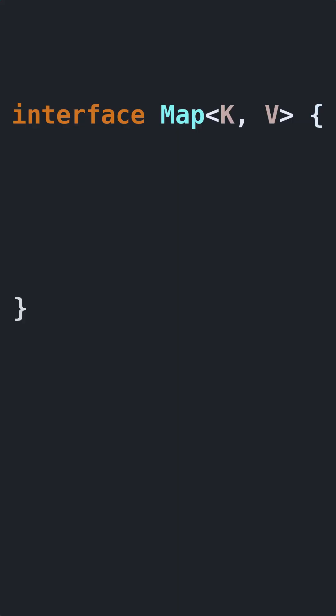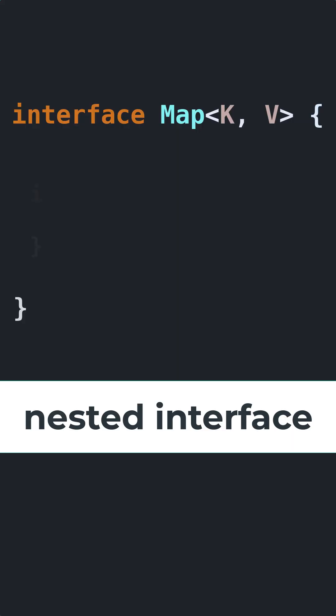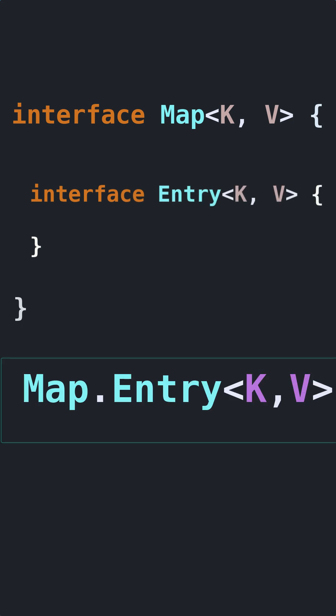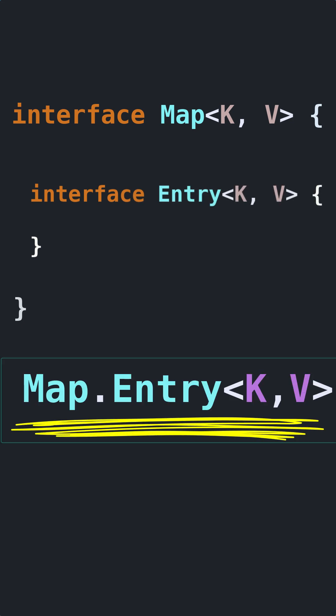Entry is an interface present inside the Map interface. Since Entry is a nested interface, to access it you have to use Map.Entry and then specify the key and value types.